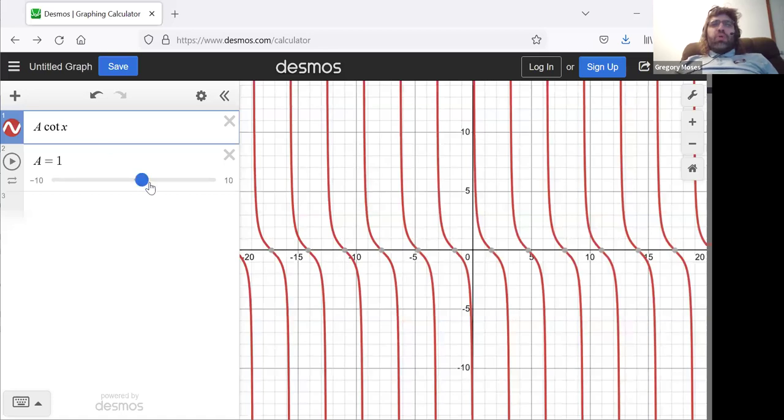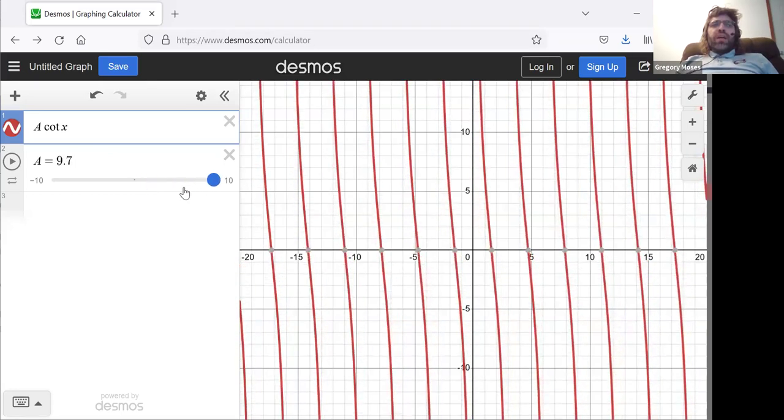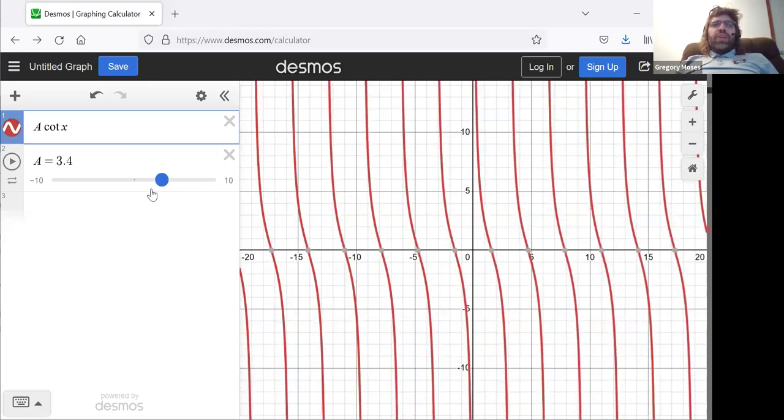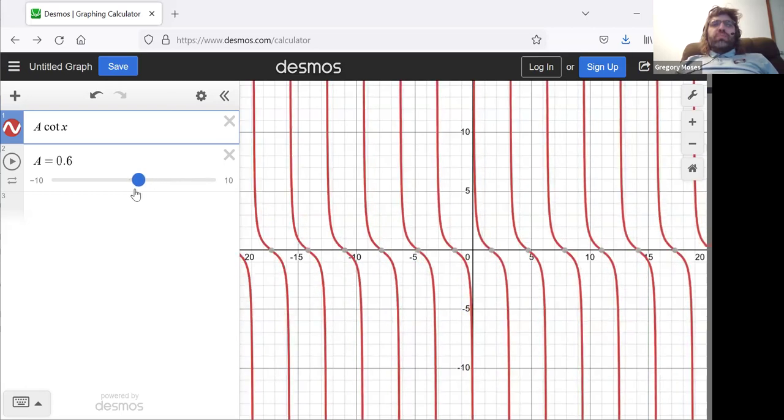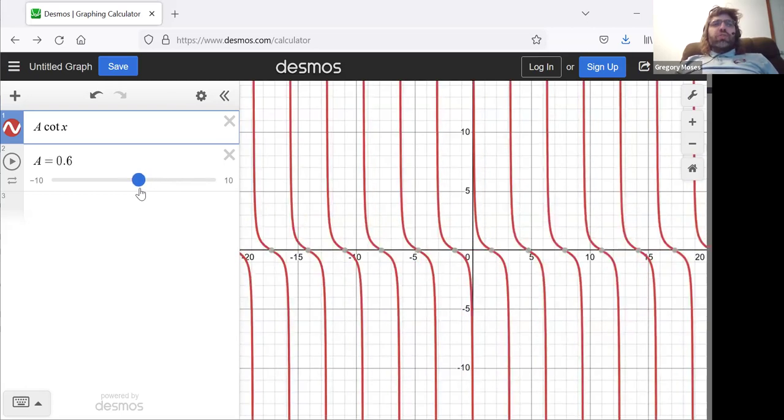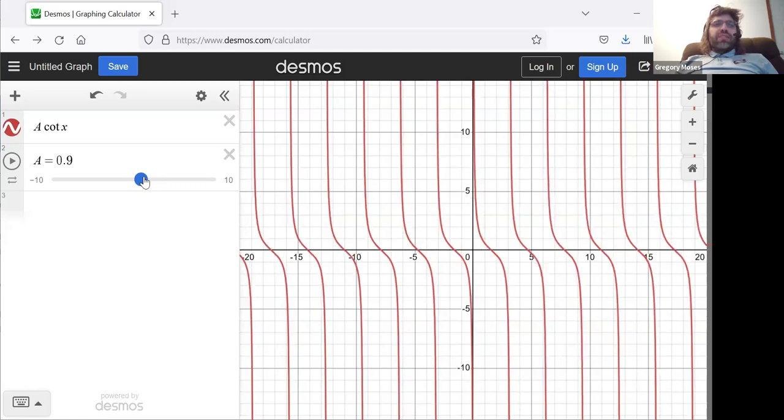As A goes up, this thing gets pulled upwards. As A gets close to zero, this thing gets smooshed down towards the x-axis.